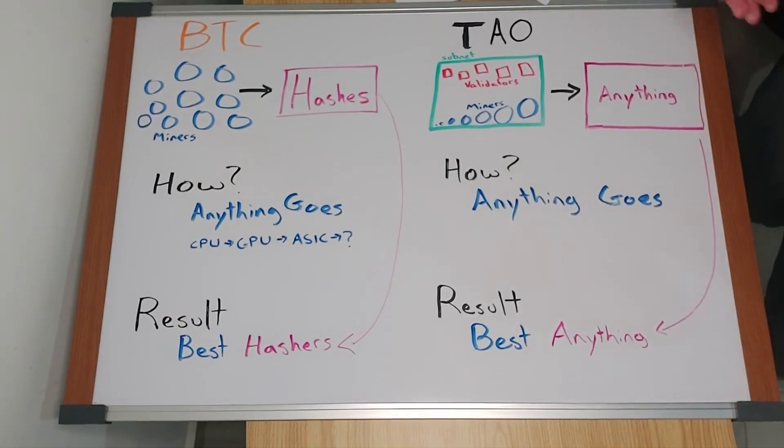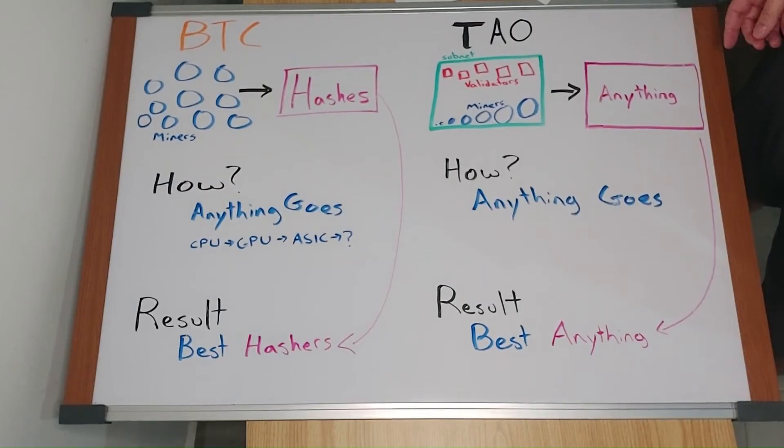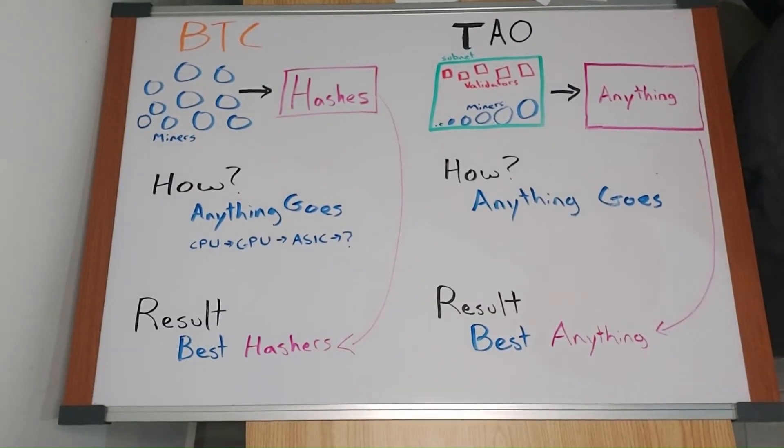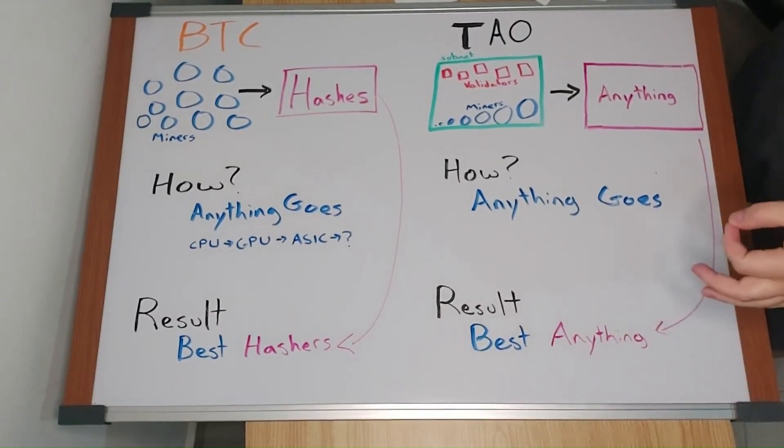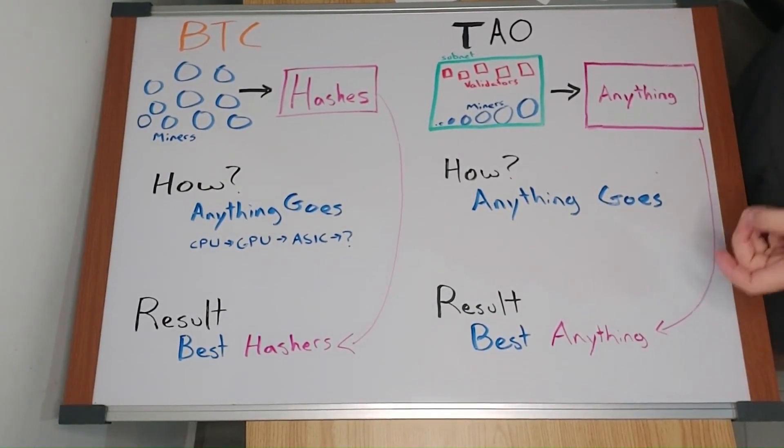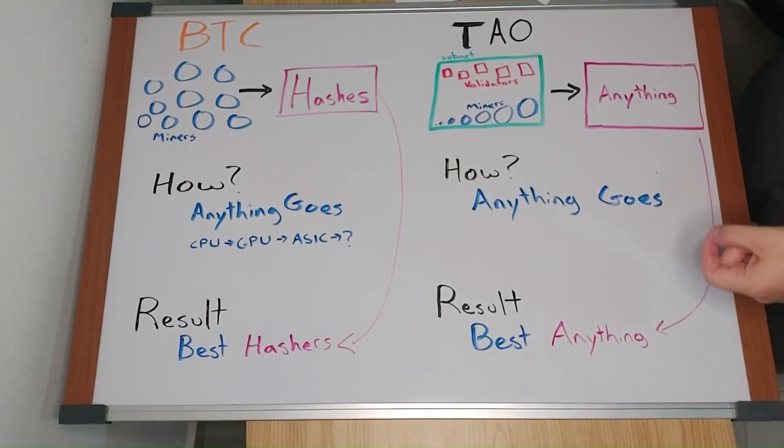So far, we've seen a few dozen subnets or tasks on BitTensor. This number will scale up to over a thousand this year. BitTensor will fundamentally change how the world works. It will be unimaginably large in scale. Anything that can be verified by code will be done best on BitTensor.